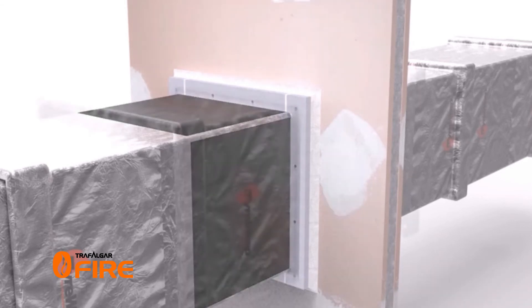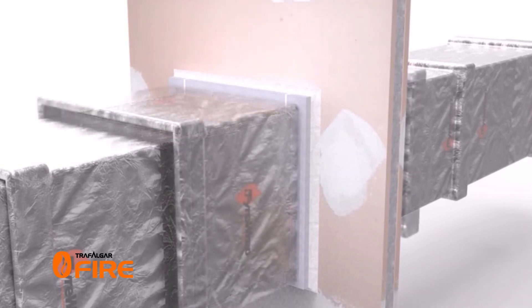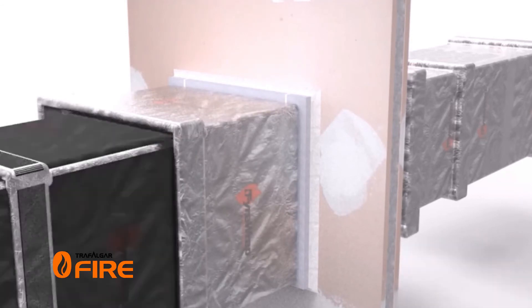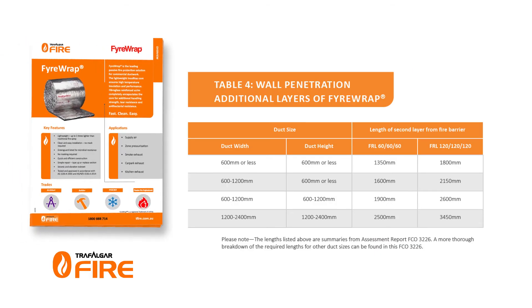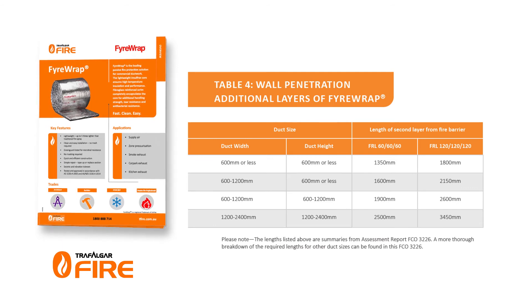Finally a second layer of firewrap is applied for a set distance on each side of the wall penetration. The distance required is detailed in table 4 of the Firewrap technical manual.